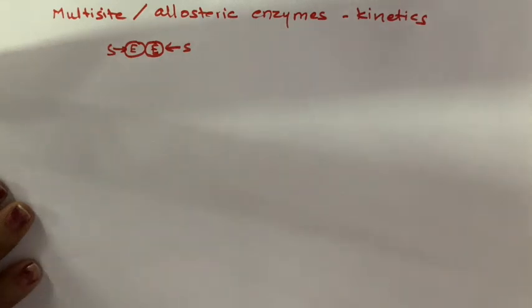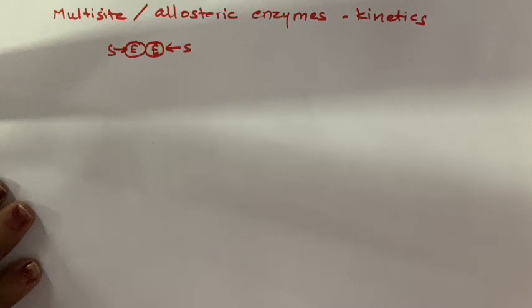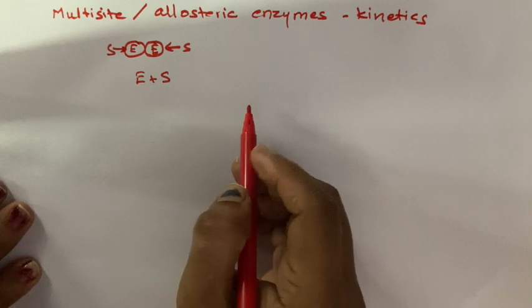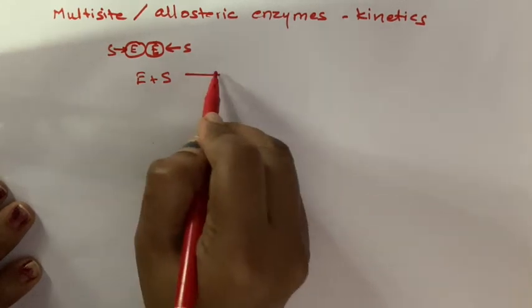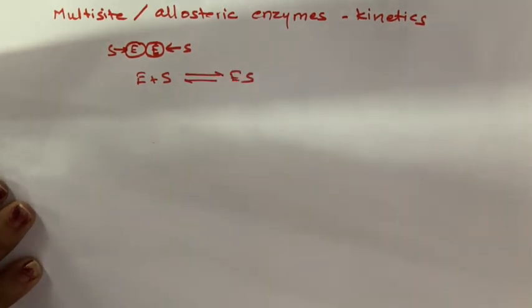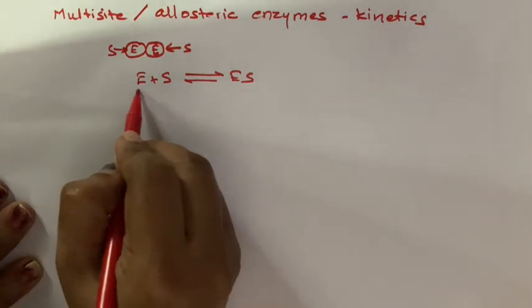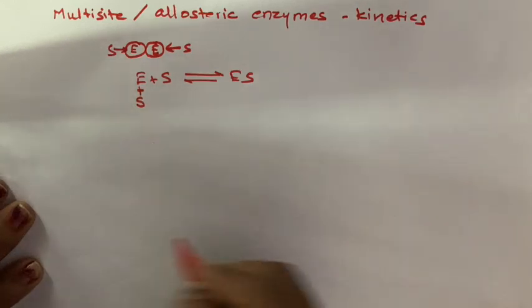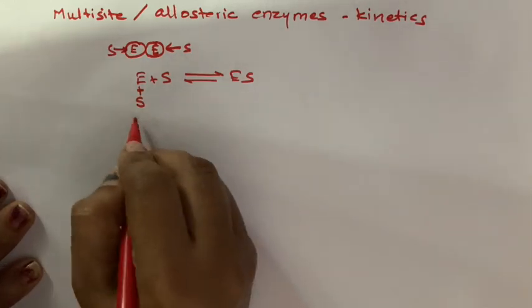It is going to have more than one site for the substrate to bind. So how do we write the equation for this kind of enzyme? The enzyme can bind to the substrate giving us Es. Also this enzyme will have another site to which substrate can bind, giving us Se.